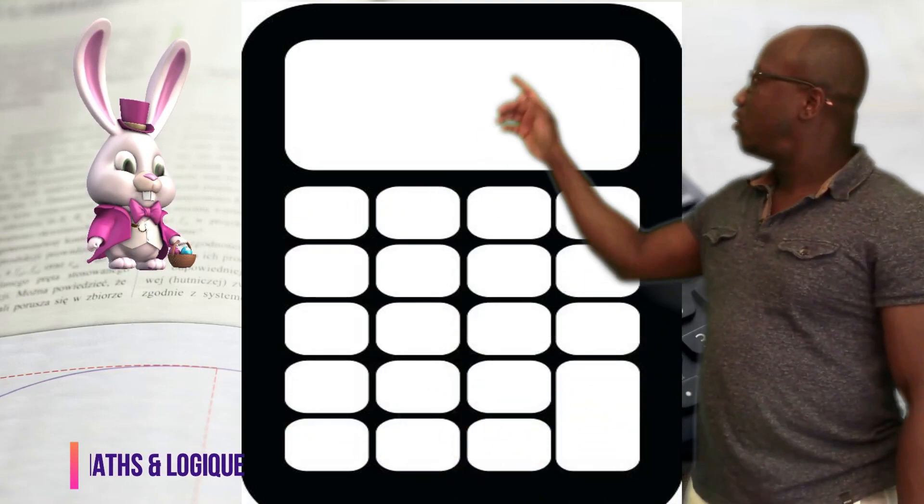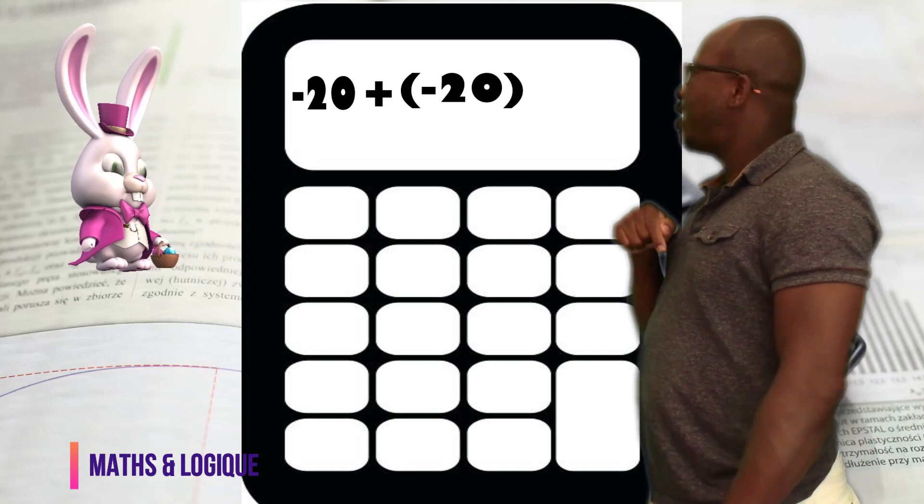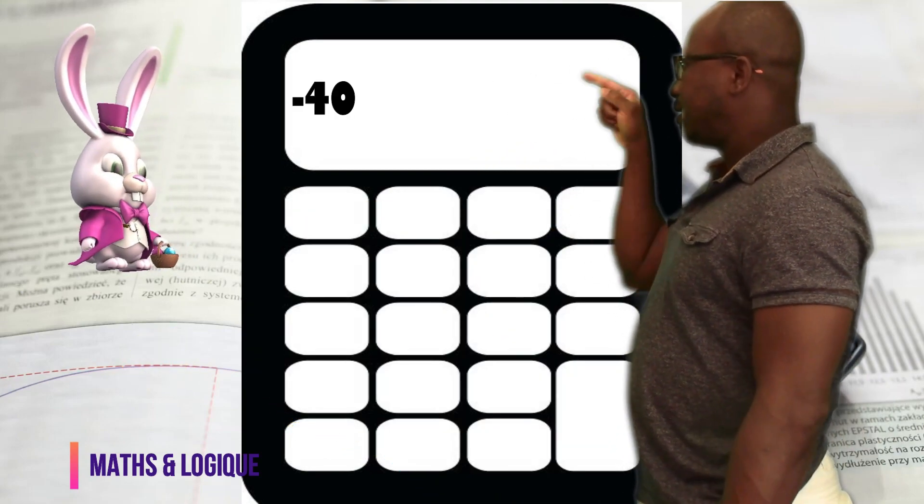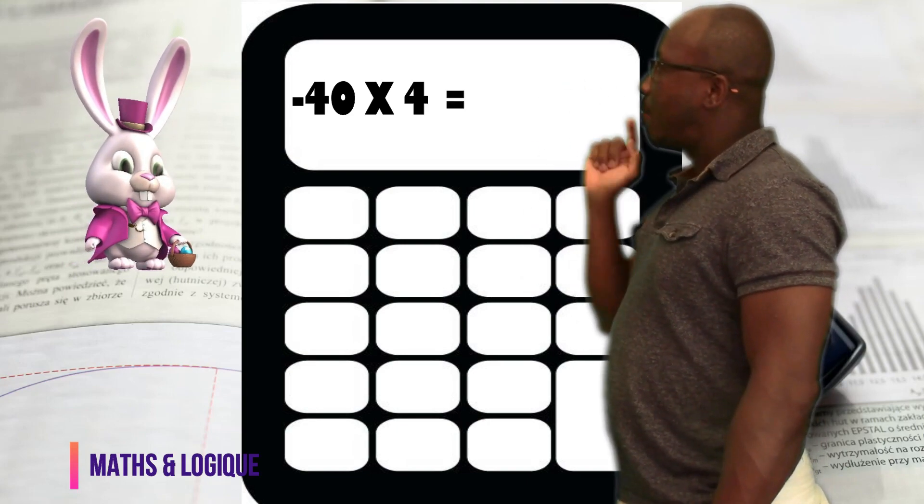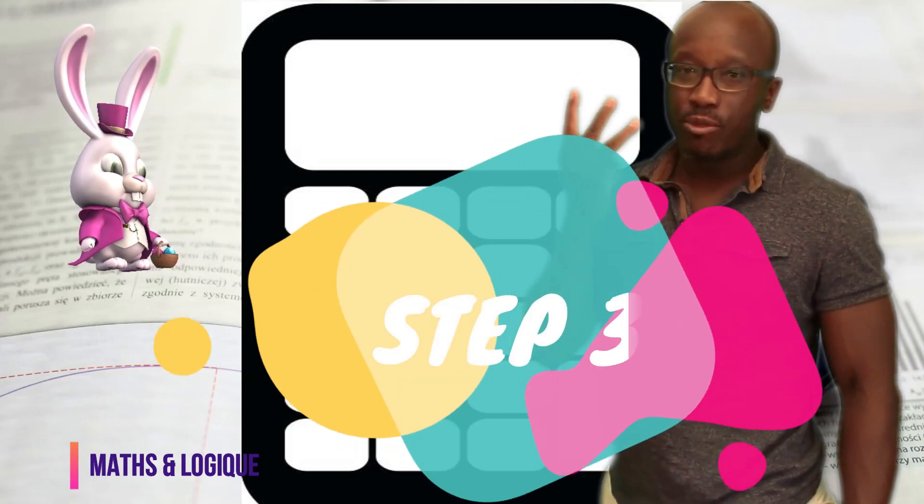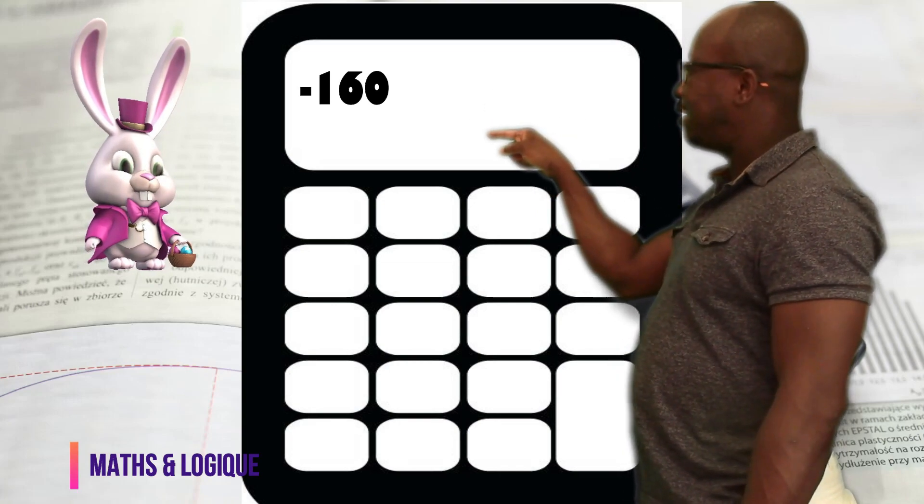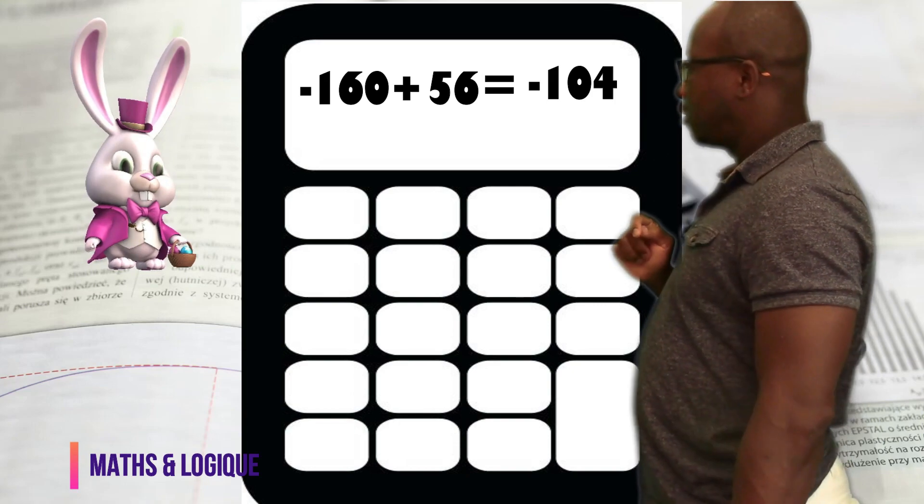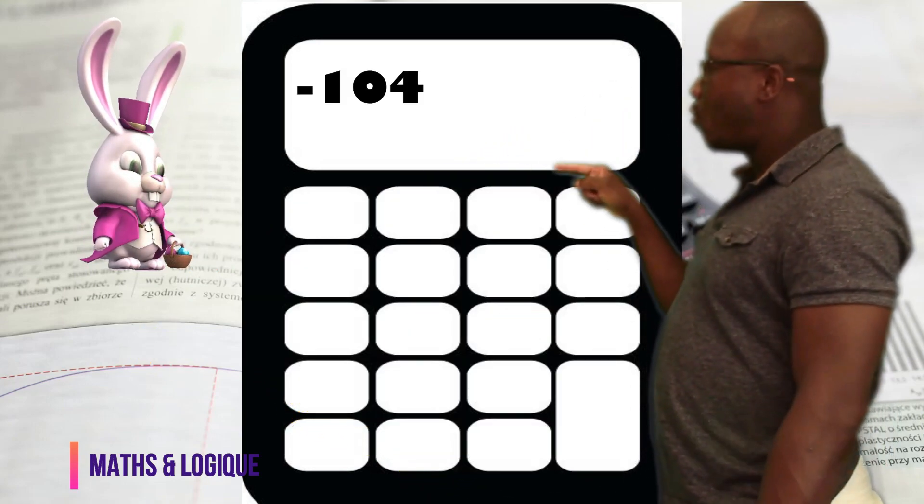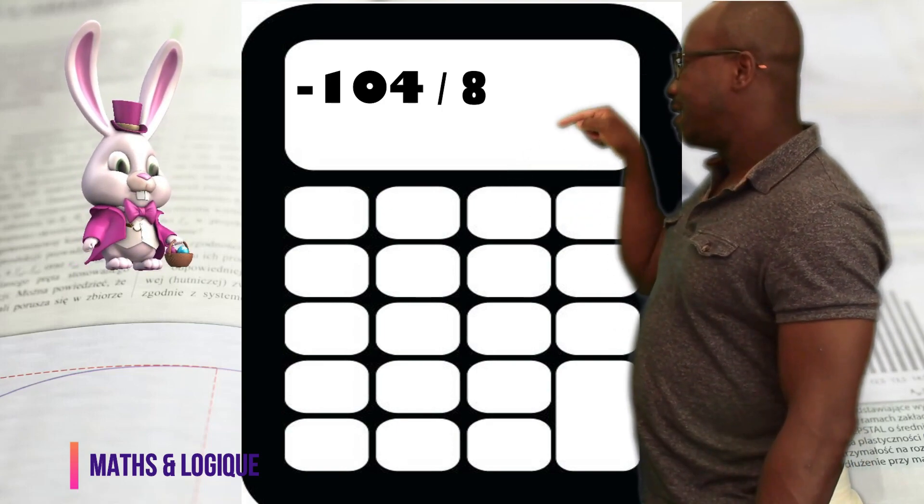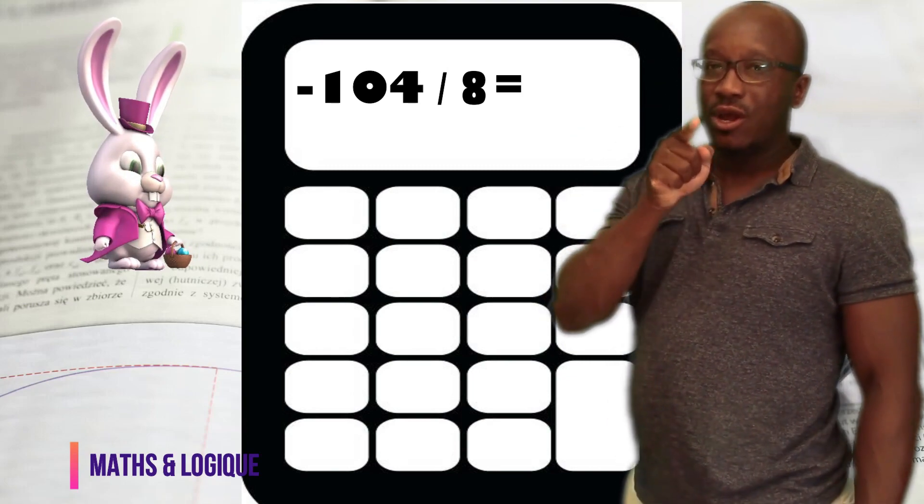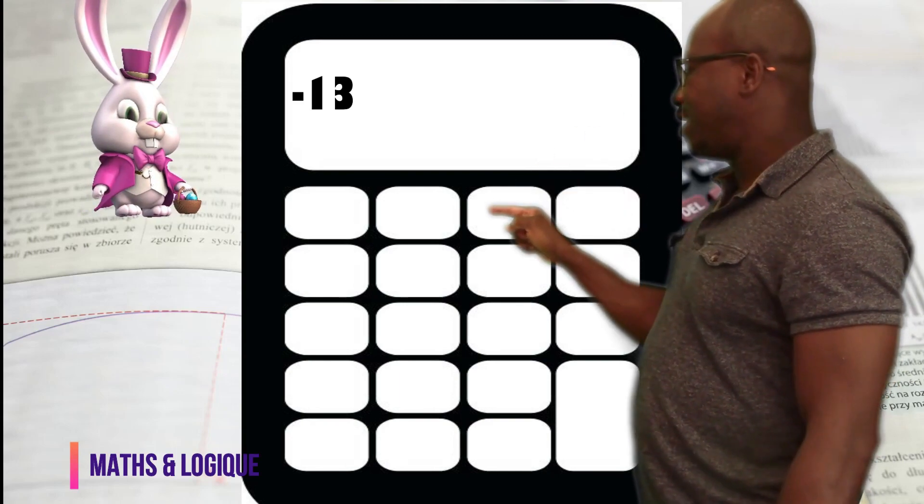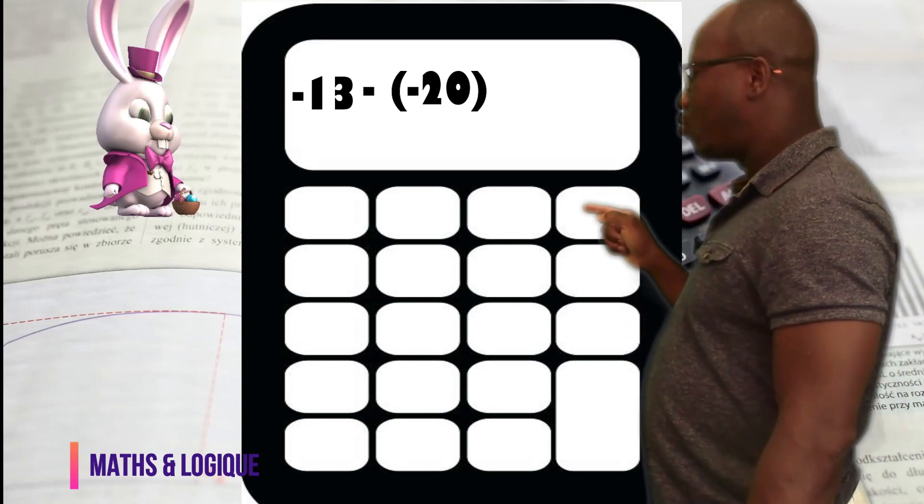Step number 1. Minus 20 plus minus 20 equals minus 40. Step number 2. Minus 40 times 4 equals minus 160. Step number 3. Minus 160 plus 56 equals minus 104. Step number 4. Minus 104 divided by 8 equals minus 13. Step number 5, the final step. Minus 13 minus minus 20 equals 7, which is the result expected.